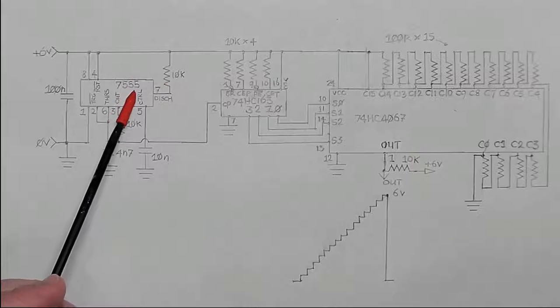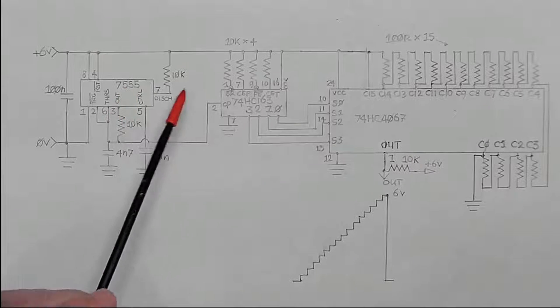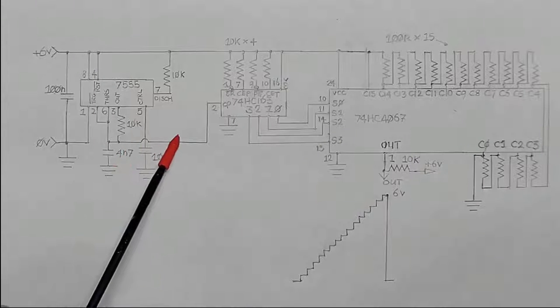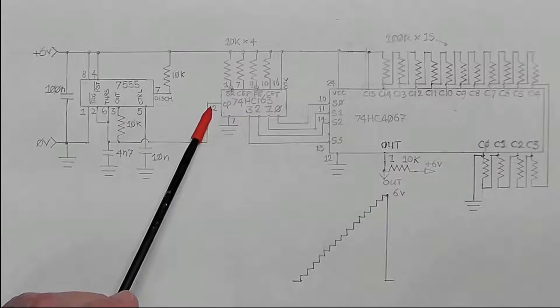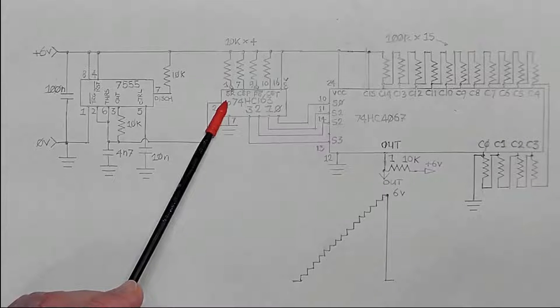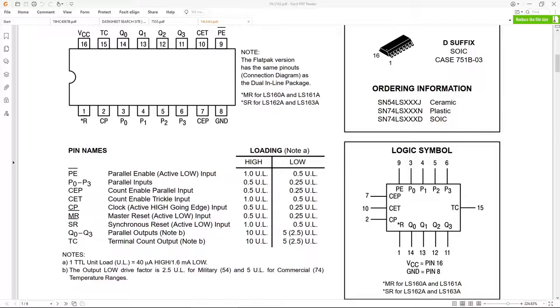The output of it is 18.3 kilohertz which gets fed into the clock input of the 74HC163 chip. Now that chip is a counter chip and you'll see a pinout of it here. This is actually LS version not the HC version but the pinout is entirely the same so we can use it.